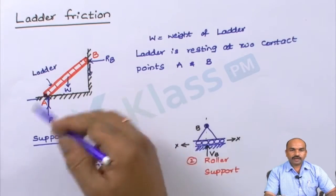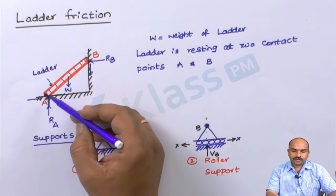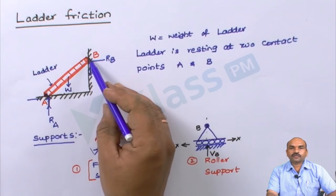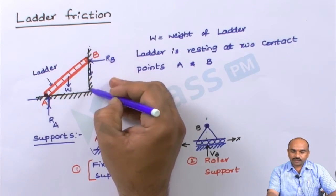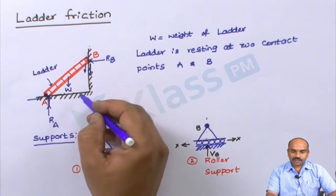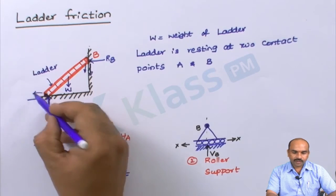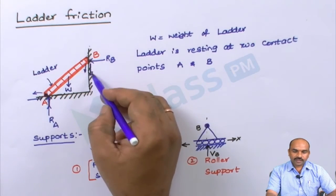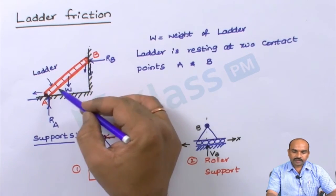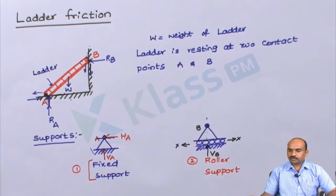This is what the ladder friction is. Because of friction, this ladder can stand on a floor or rest on a vertical wall. Suppose this vertical wall is a smooth wall — the ladder will slip down. If the floor is a smooth floor, the ladder will slip in this direction. That is why if the surfaces are rough, the ladder will rest on the corresponding wall or floor.